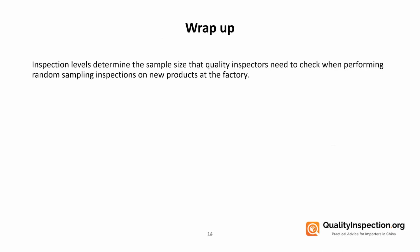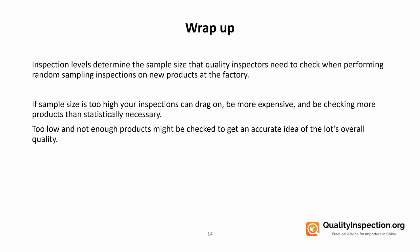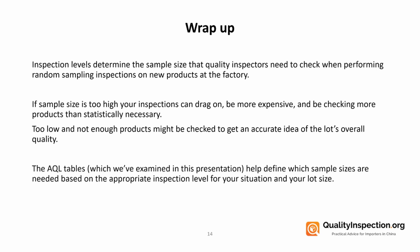So let's wrap up about inspection levels. They're used to determine the sample size that quality inspectors need to check when performing random sampling inspections on new products at the factory. If your sample size is too high, inspections are too long and expensive. If it's too low, then we're not checking enough products to assure that the quality is actually okay. The AQL tables help to define which sample sizes are relevant based on the inspection level that is good for your situation and your lot size.